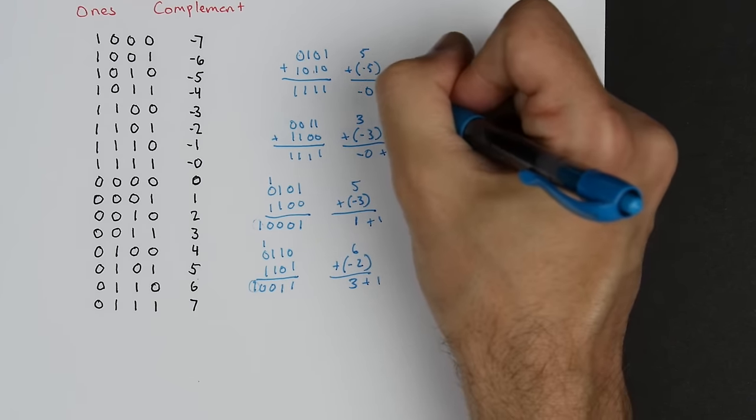Let's try 6 minus 2 in 2's complement. 6 is 0110, and negative 2 is 1110. Adding them: 0 plus 0 is 0, 1 plus 1 is 2 so 0 carry 1, 1 plus 1 plus 1 is 3 so 1 carry 1, and 1 plus 1 is 2 so 0 carry 1. Ignoring the fifth bit, we get 0100, which is 4. Sure enough, 6 minus 2 equals 4. The 2's complement works very well.